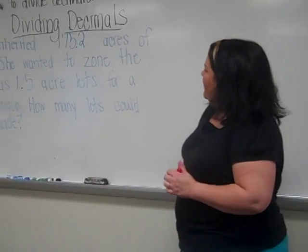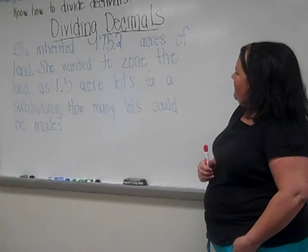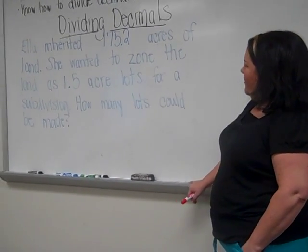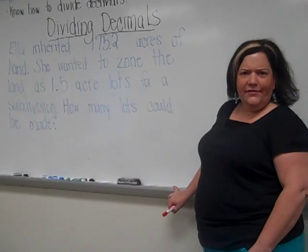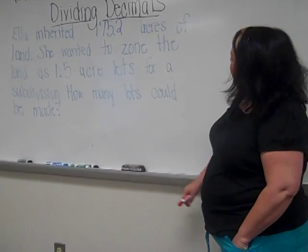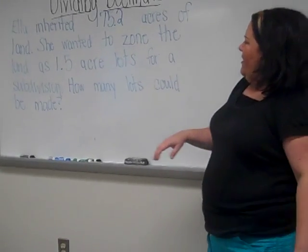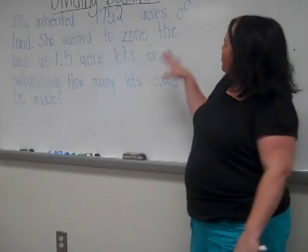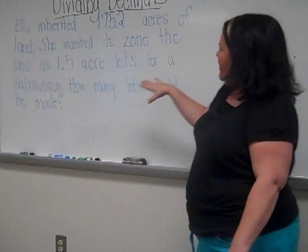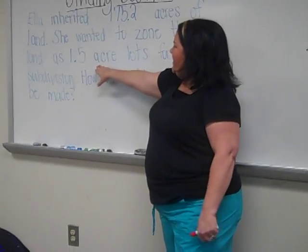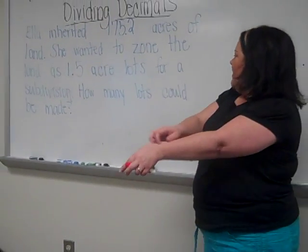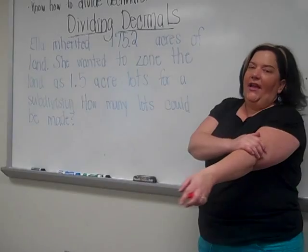Ella inherited 175 and 2 tenths acres of land. Ooh, I wish I was in Ella's family. She wanted to zone the land, and zoning you guys means kind of breaking up the land. She wanted to zone the land as 1 and 5 tenths acre lots for subdivision. How many lots could be made?